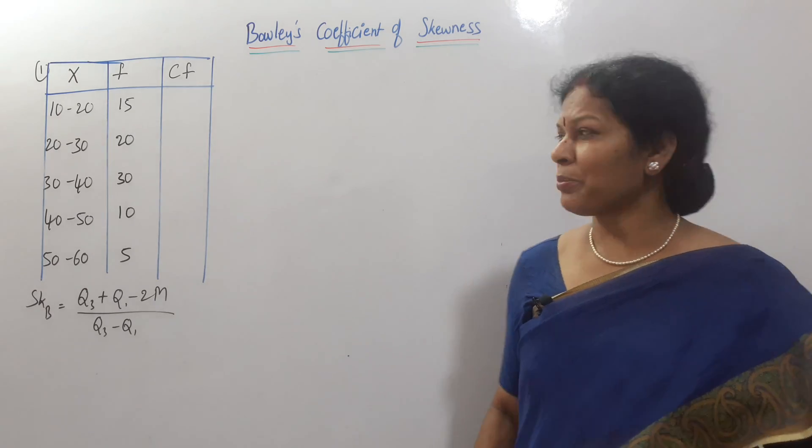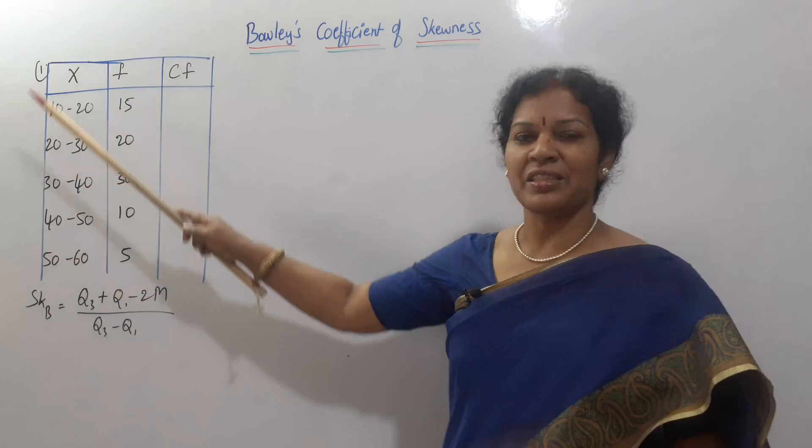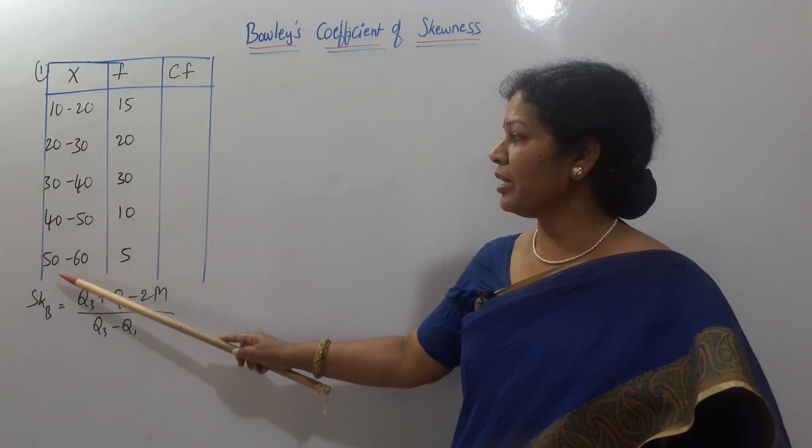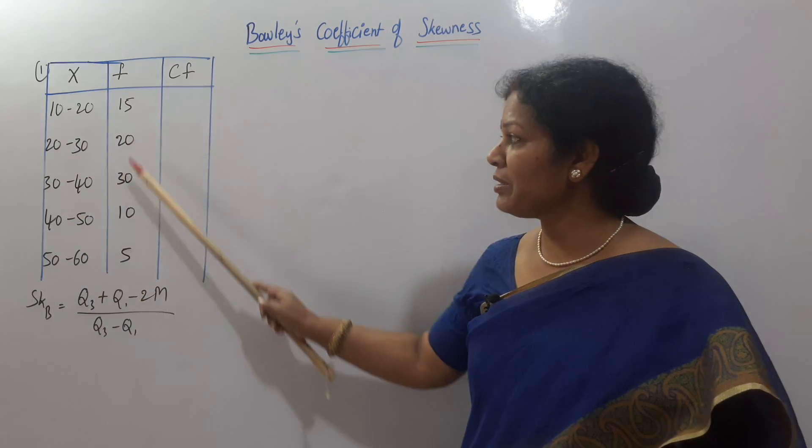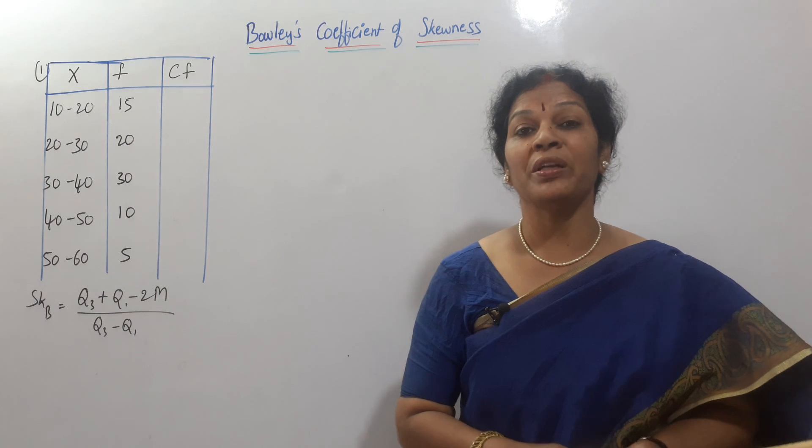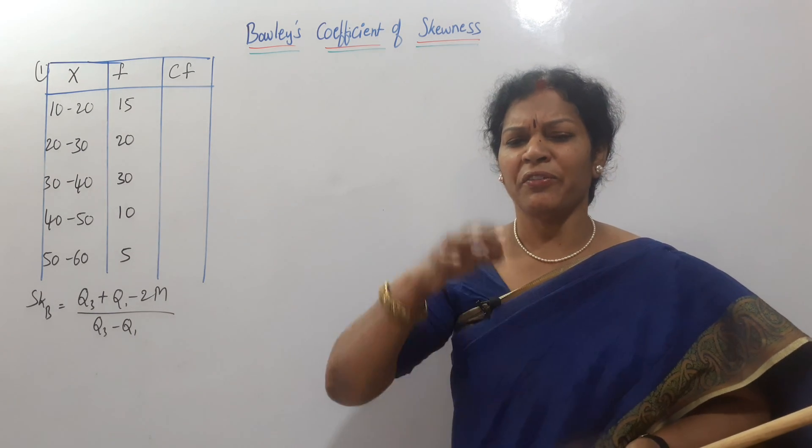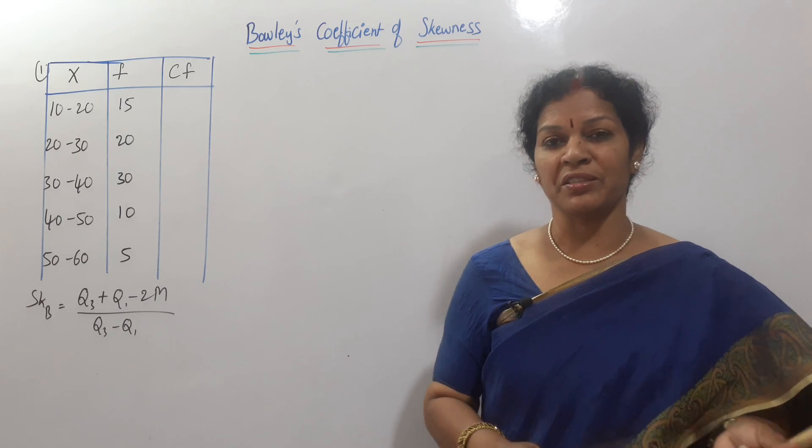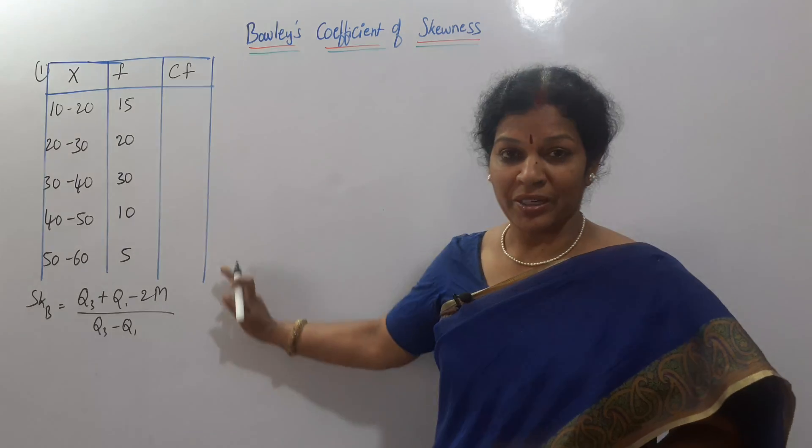We will work out very quickly one problem. This is the problem given to us. X values are in class interval 10 to 20, 20 to 30 like up to 50 to 60. And frequency is also given. Whenever you want to calculate median or Q1 or Q3, please remember, first step is CF calculation we have to do.